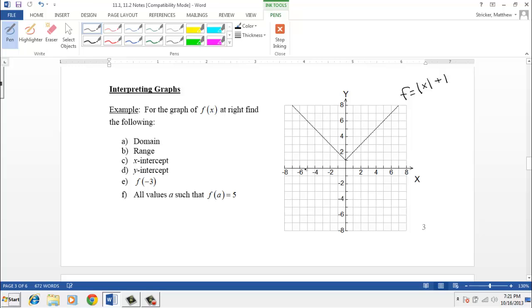Well, any x value can be plugged in here, because this graph keeps on going to the right and it keeps on going to the left, so it's going to end up covering all the x's out here and all the x's out to the left. So I would say the domain is negative infinity to infinity. There's no restrictions on the x values.